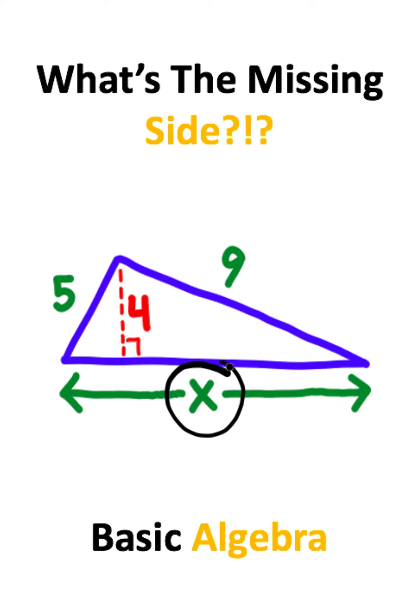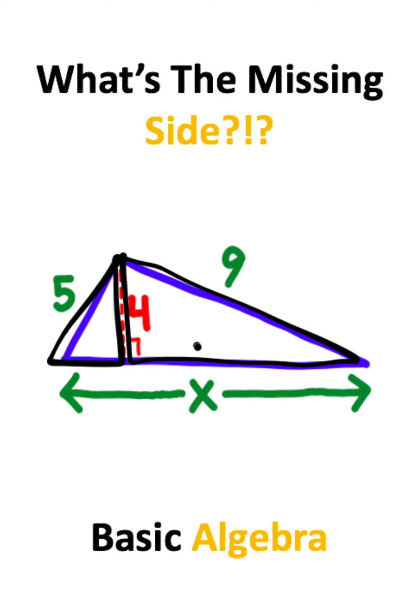The secret to finding the missing side of this triangle is to split this up into two right triangles and solve for the two missing sides.